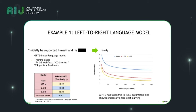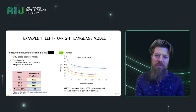The first is with a left-to-right language model like GPT-2 or GPT-3. The way these models work is that you have text, and the goal of the model is to predict the next word given the past — we call that left-to-right for languages that read from left to right. For example, given the phrase "initially he supported himself and his something," we want to predict the next word, which is going to be "family."